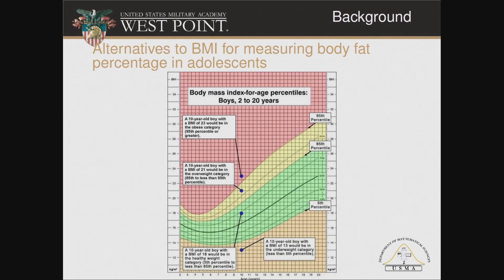BMI is a pretty good indicator of body fat percentage in Caucasian populations — I want to caveat that and say adult Caucasian populations. Right here we have the CDC growth curve, which you may have seen at the pediatrician's office. They're used during wellness exams, and some schools use them to classify adiposity in children and adolescents. On the horizontal axis is age in years, the vertical axis is BMI, with different bands: green is normal weight, yellow is overweight, red is obese, and the tan color at the bottom is underweight.